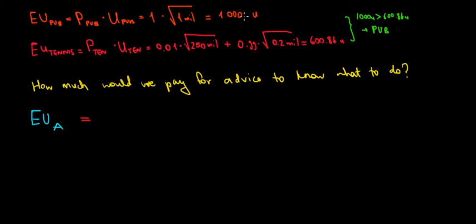The expected utility from opening the pub is a thousand units, meaning that we must have at least a utility of a thousand units in expectation for paying for that advice. Now, the way the expected utility looks when we pay for the advice is going to be slightly different. So let's solve it.